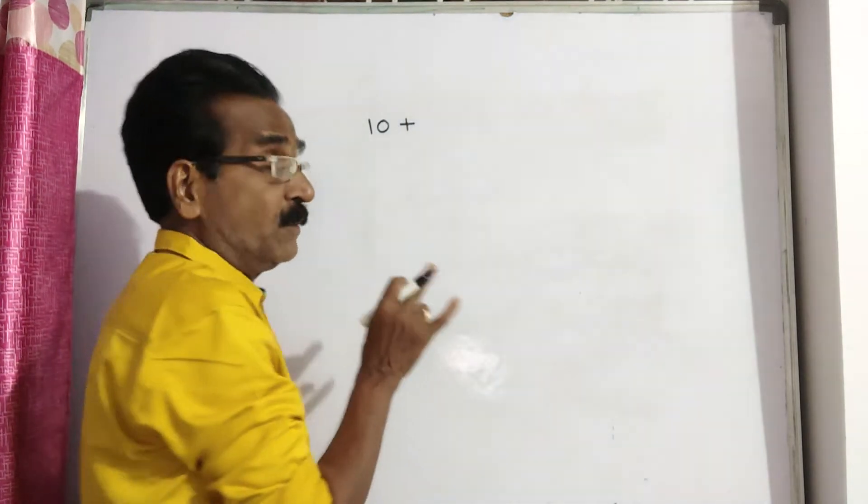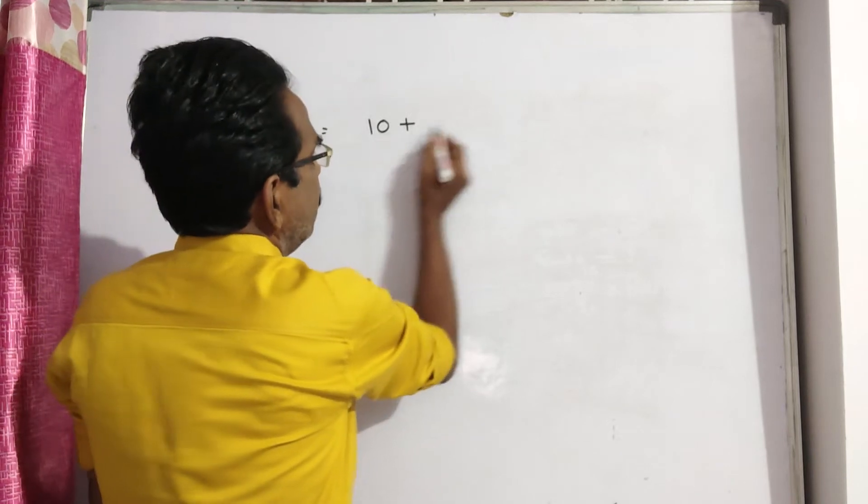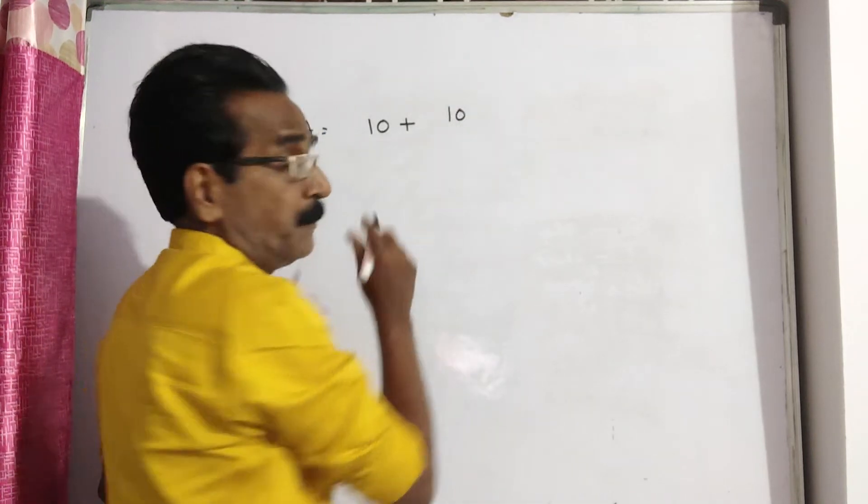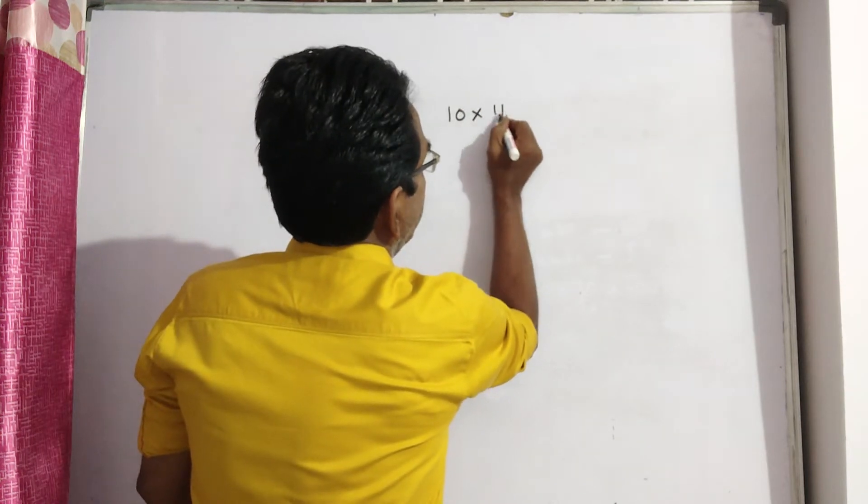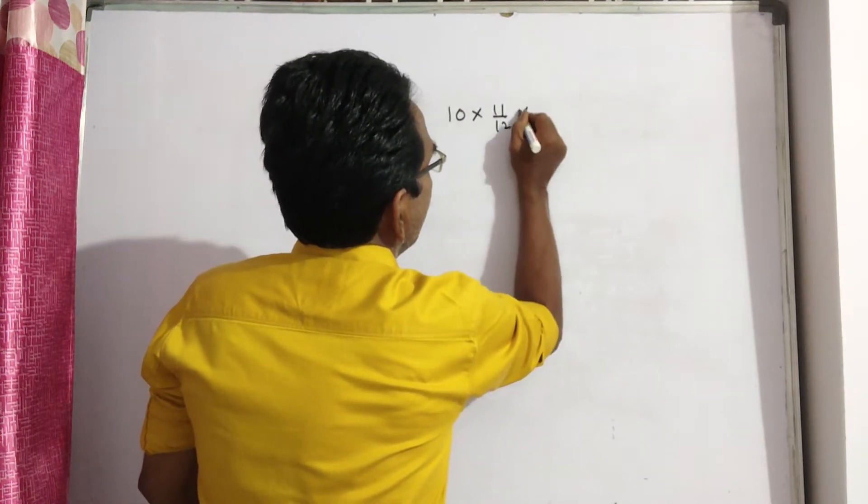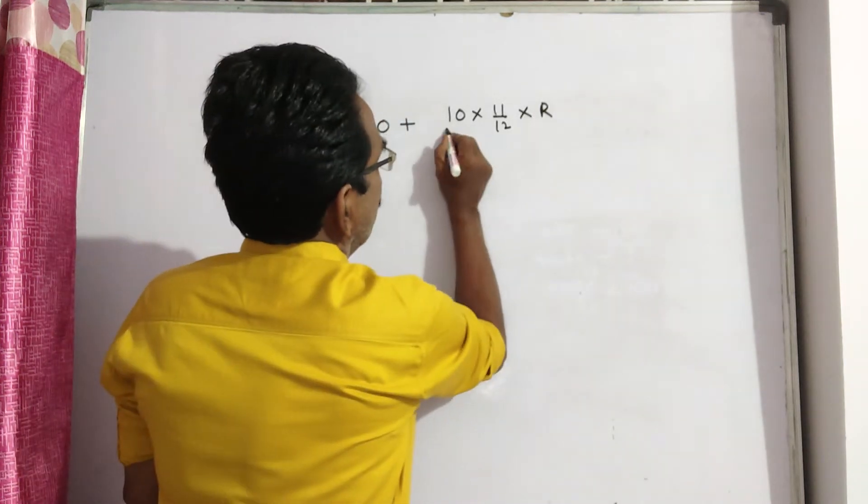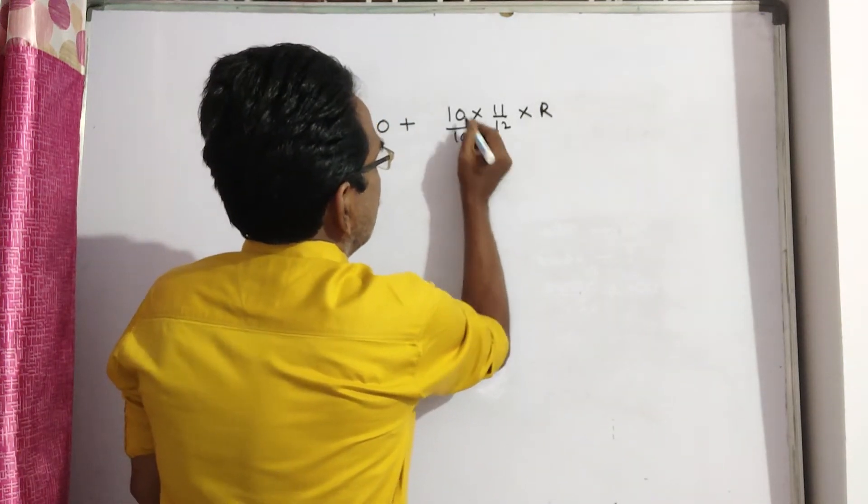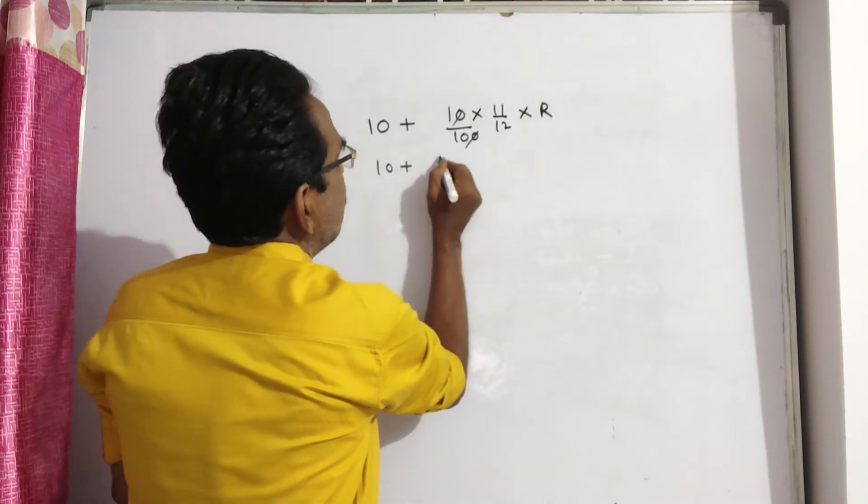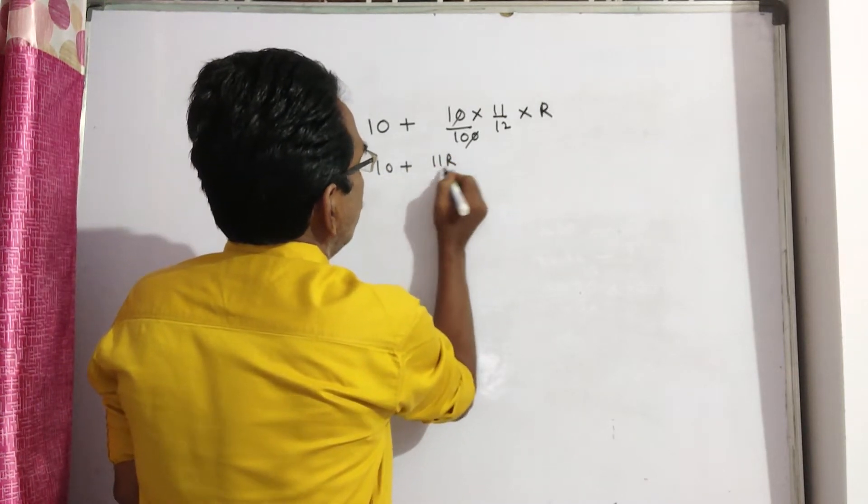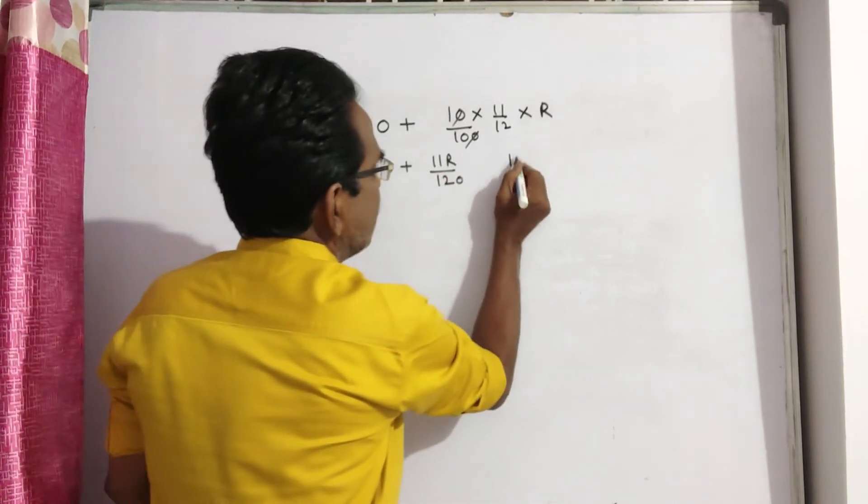then the total amount will be principal plus interest on rupees 10 for 11 months: P, T, rate of interest R by 100. This is equal to 10 plus 11R by 120. This is equation 1.